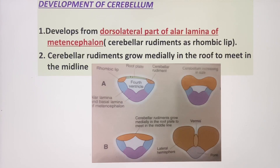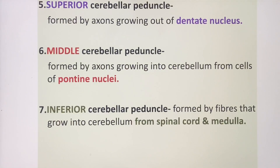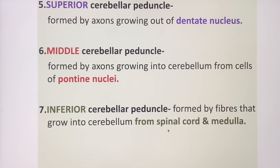The cerebellum develops from the dorsolateral part of the alar lamina of the metencephalon, and the cerebellar rudiments grow medially in the roof to meet in the midline. The superior cerebellar peduncle is formed by axons growing out of the dentate nucleus. The middle cerebellar peduncle is formed by axons growing into the cerebellum from cells of the pontine nuclei. The inferior cerebellar peduncle is formed by fibers growing into the cerebellum from the spinal cord and medulla.